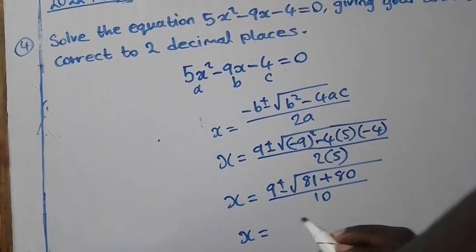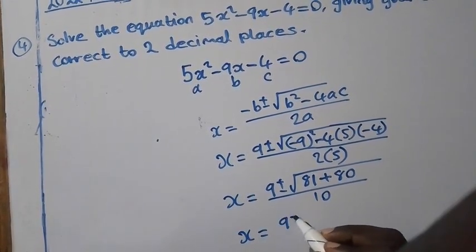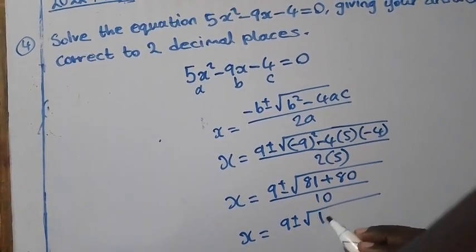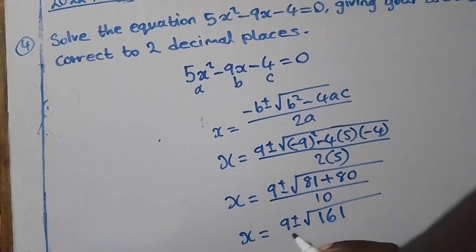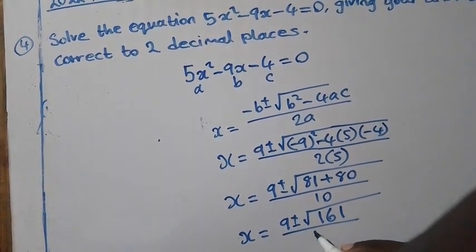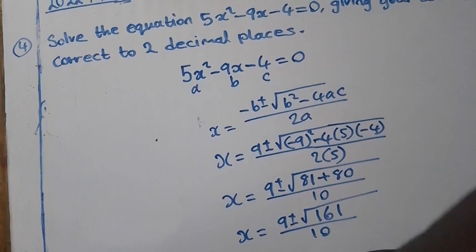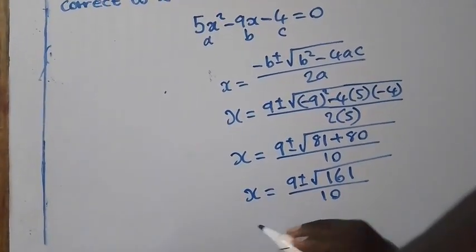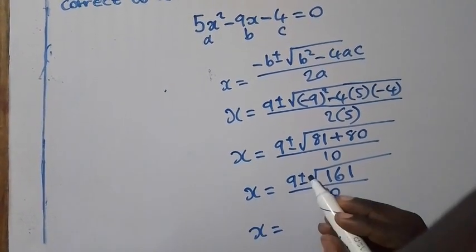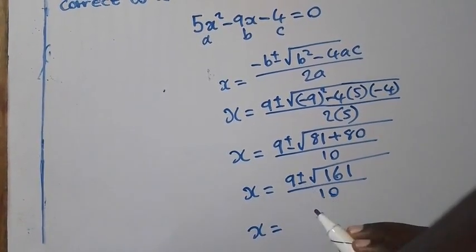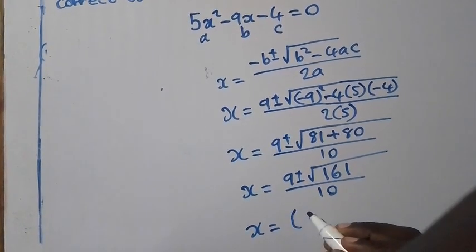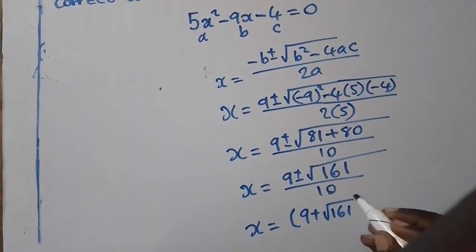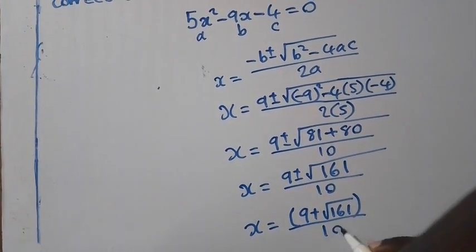So x will be equal to 9 plus or minus square root of 81 plus 80, which is equal to 161, over 10. So x will be equal to, at this stage now, we can split positive or negative. So we shall have open brackets 9 plus root 161 close brackets over 10.